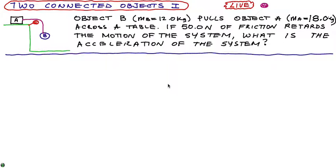Okay, so we have two objects that are connected together. We have something like a table, we have object A sitting on the table, and that's connected by a string to object B. The string passes over a pulley, I have that drawn in red.